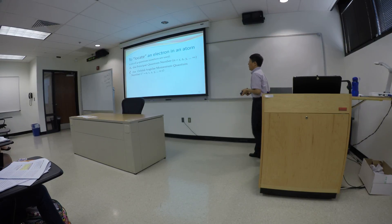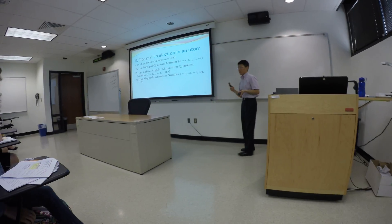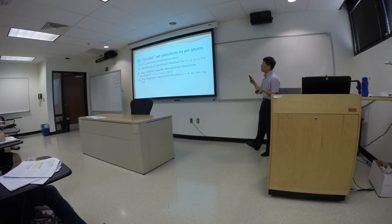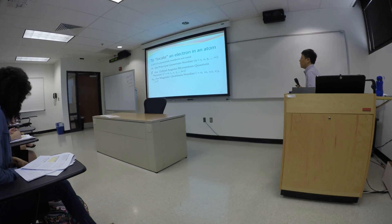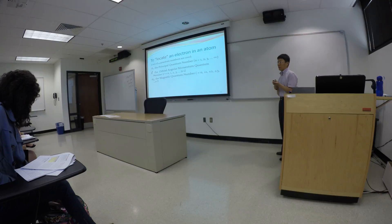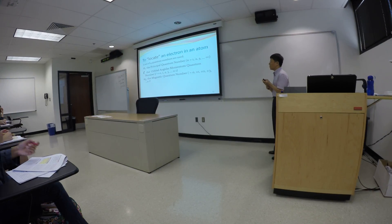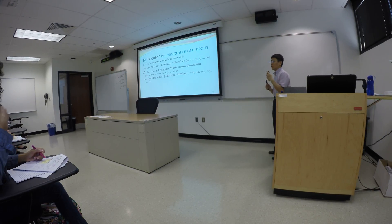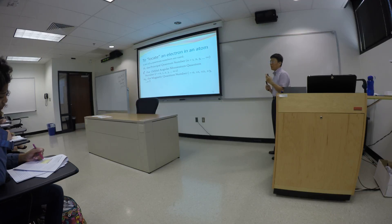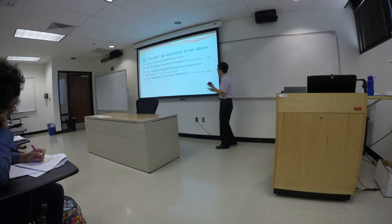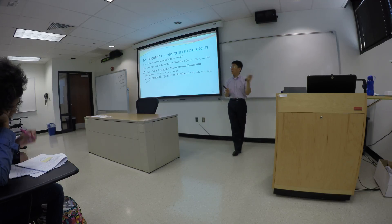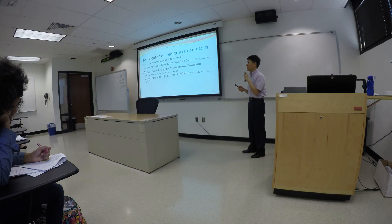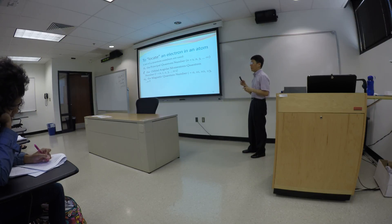The third quantum number is ml — you use the italicized l as a subscript. Ml is the magnetic quantum number and has something to do with the number of orbitals. Ml has values of zero, positive one, negative one, positive two, negative two, and so on. Ml can be zero, negative, or positive, and it also has a relationship with l.